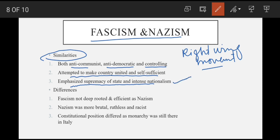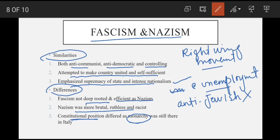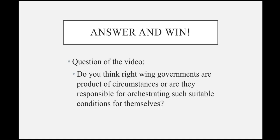Ab let's see what were the differences. Fascism Italy mein utna deeply rooted nahi tha jitna Germany mein Nazism tha. Efficiency mein bhi Germany's Nazism aage tha — Nazis ne unemployment completely khatam kar di thi, jabke Mussolini ke daur mein unemployment ki surat tak barh gayi thi. Is ke ilawa Italian system Germany ki tarah zalimaana nahi tha, aur nah hi yeh racist ya anti-Jewish tha. The last point is constitutional differences — Italy mein monarchy thi jis ne baad mein Mussolini ko dismiss bhi kiya, lekin Germany mein aisi koi taqat nahi bachi jo Hitler ko hata sakti thi.